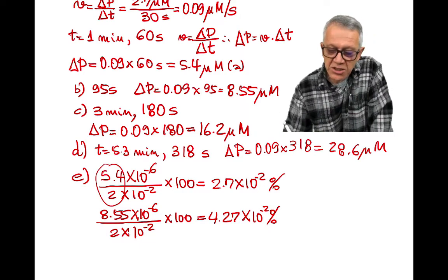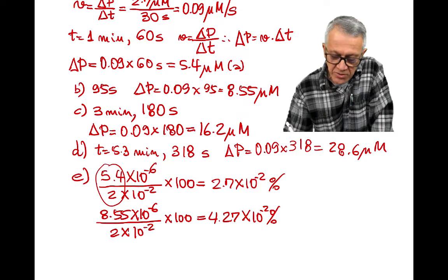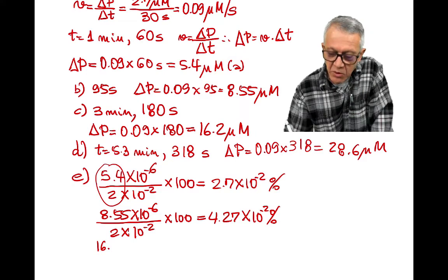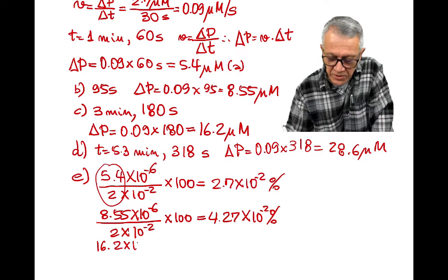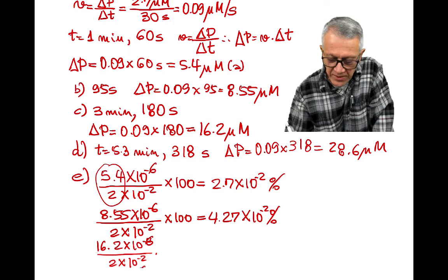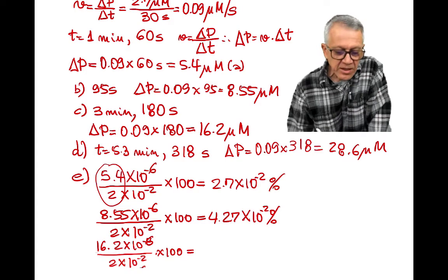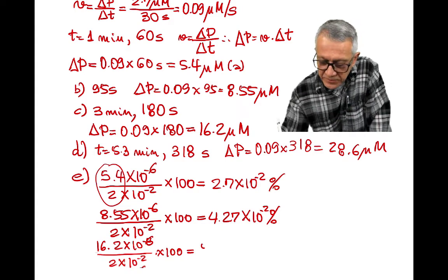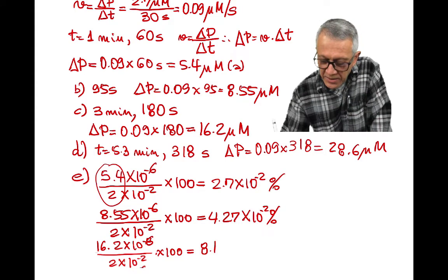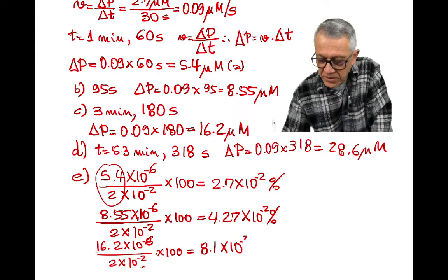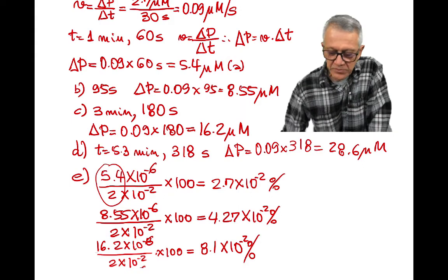Next one is, when we have 3 minutes, we have 16.2 micromolar, 10 to minus 6, divided by 2 times 10 to minus 2 times 100. This would give 8.1 times 10 to the power of negative 2 percent.